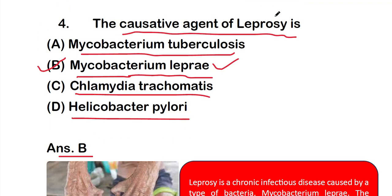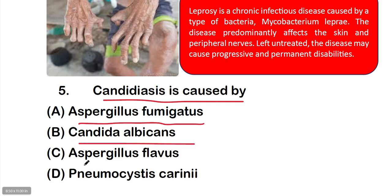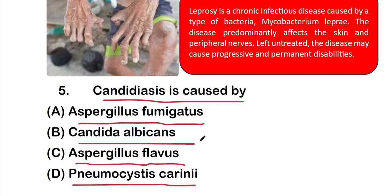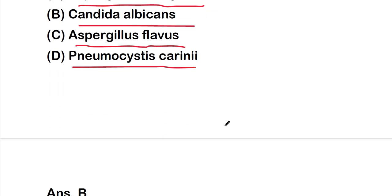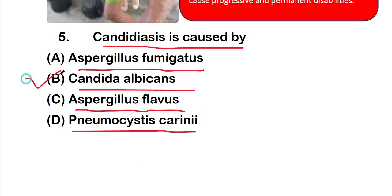Question 5: candidiasis is caused by — option A: Aspergillus fumigatus, option B: Candida albicans, option C: Aspergillus flavus, or option D: Pneumocystis carinii. The right answer is option B, Candida albicans. Candidiasis is caused by Candida albicans, a fungus.